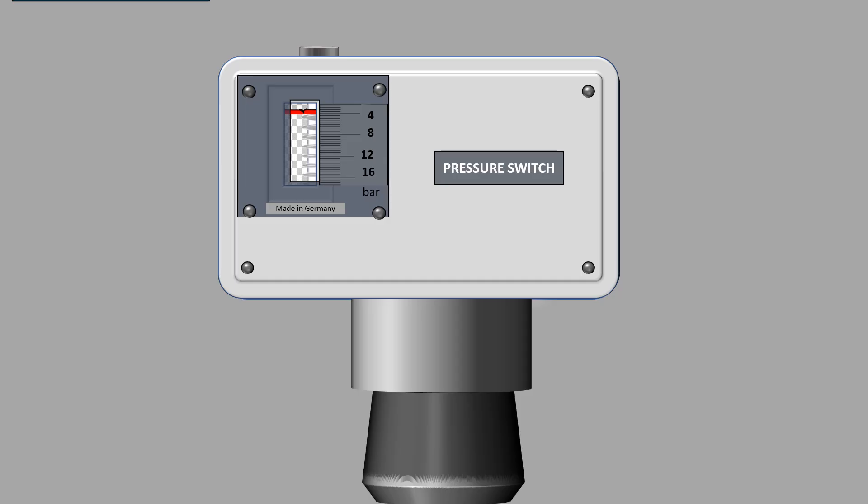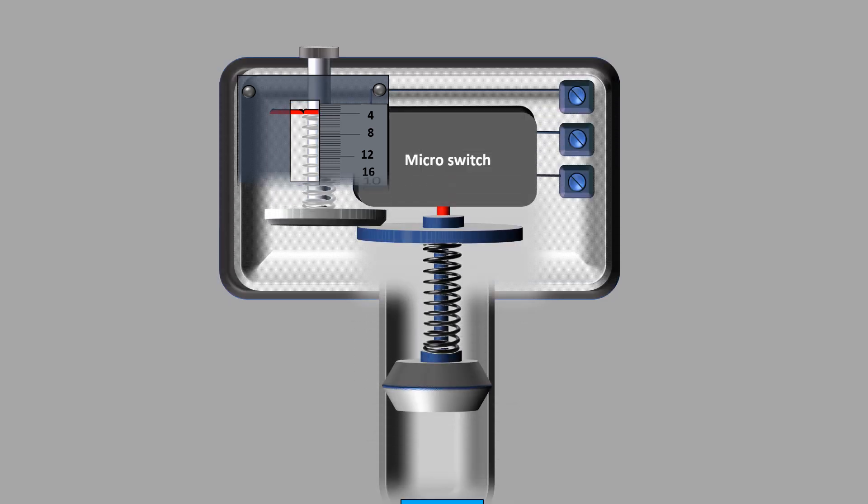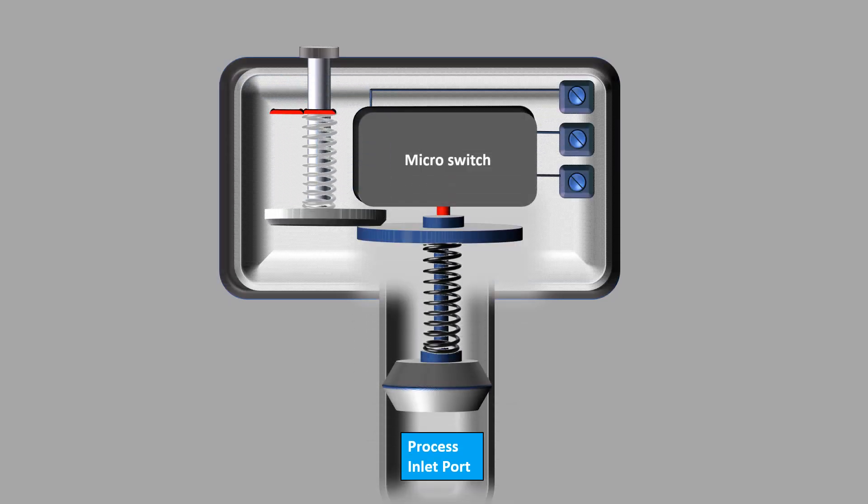Parts of a mechanical pressure switch. Process inlet port: The inlet port is the part that connects the pressure switch into the process unit.